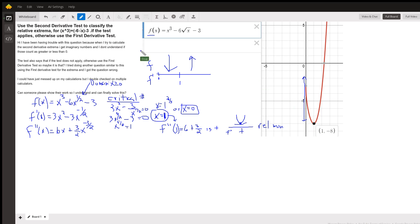And there it is. If we want to actually find out the y-coordinate of the relative minimum, we put 1 into the original function, we get 1 minus 6 minus 3 is indeed this negative 8. Okay, there you go. Hope that helped. If you have any questions, post a comment.